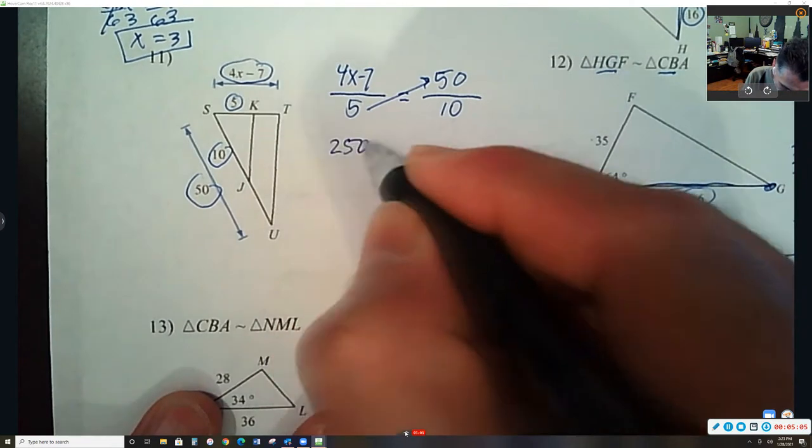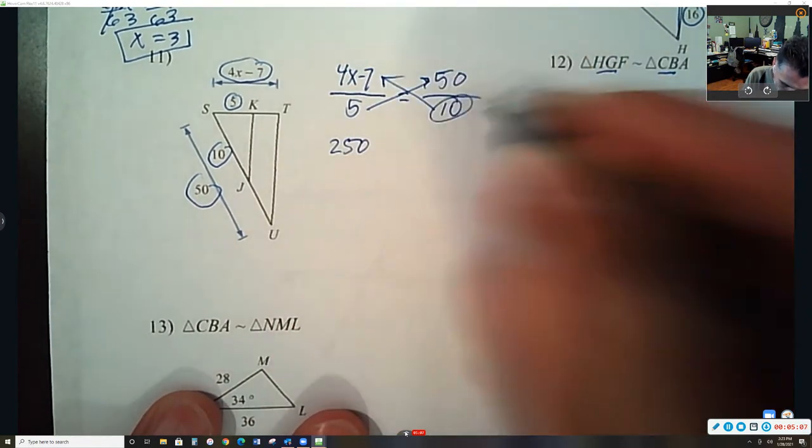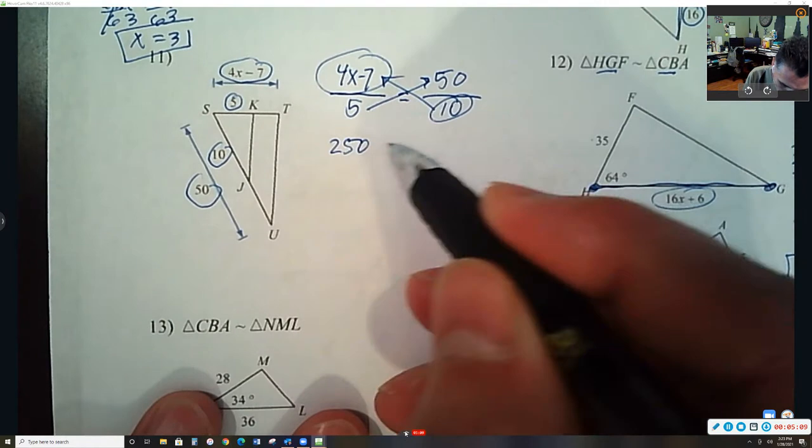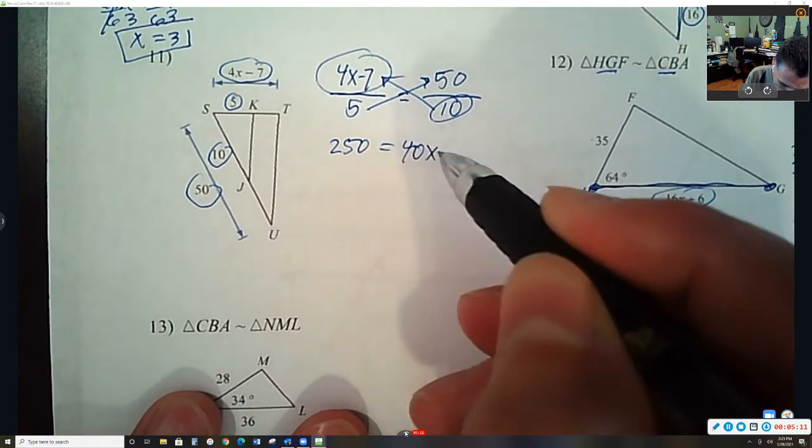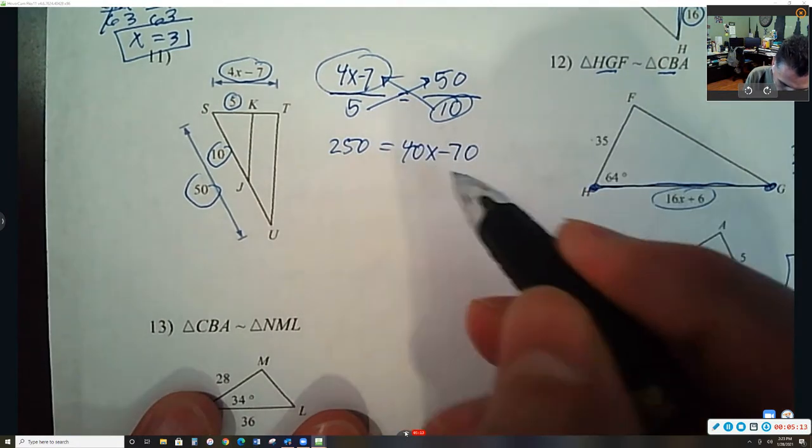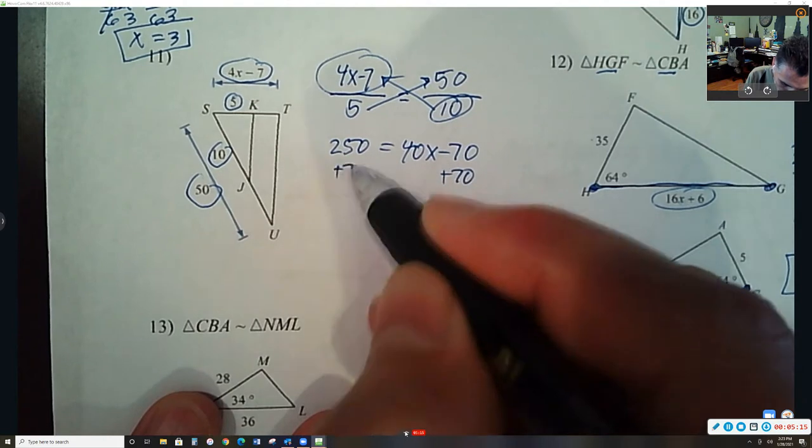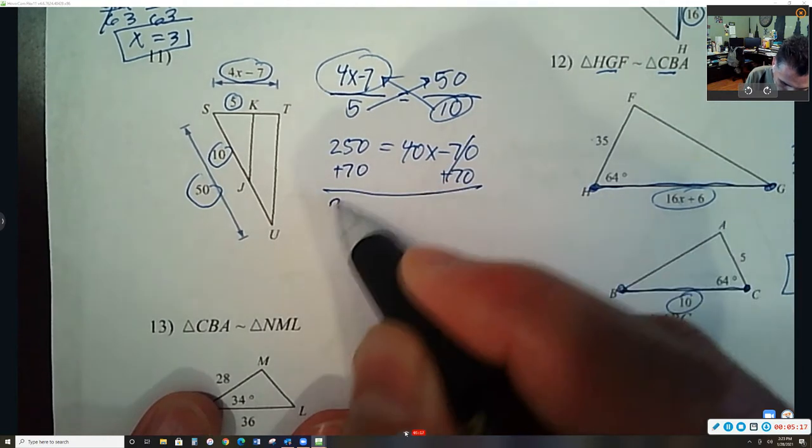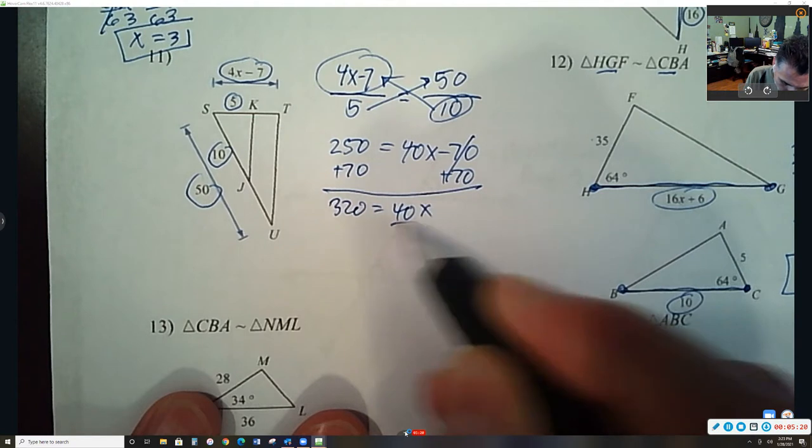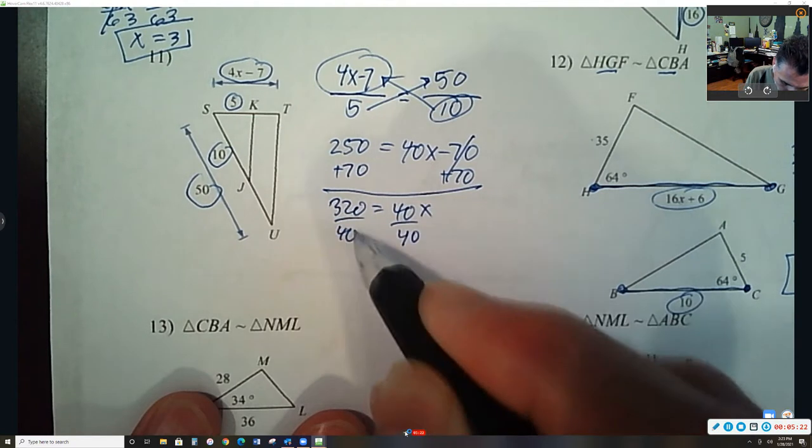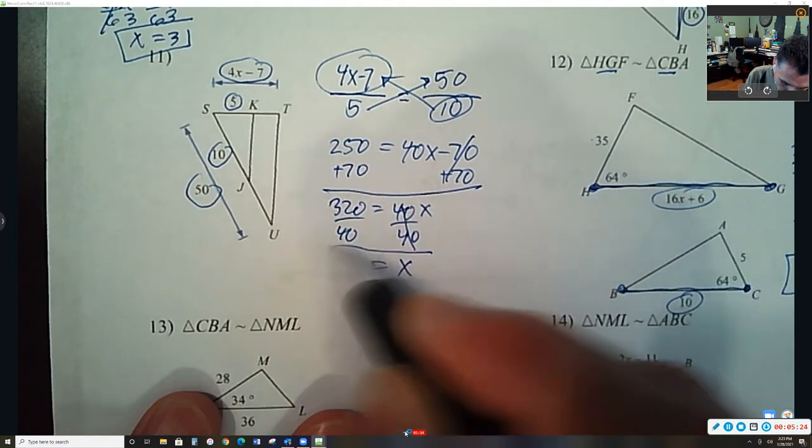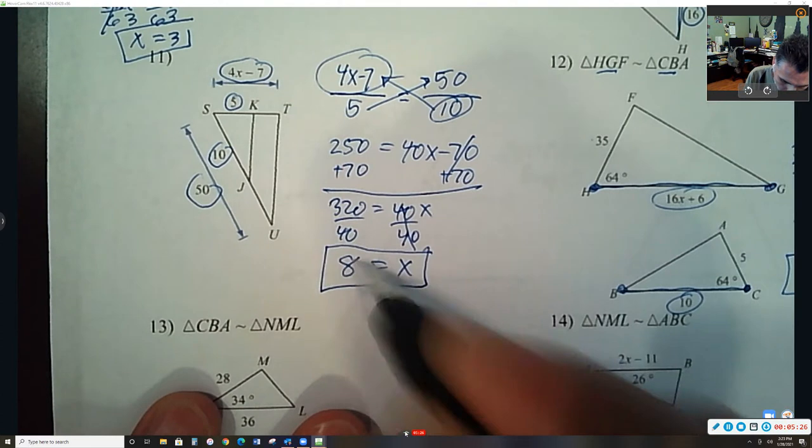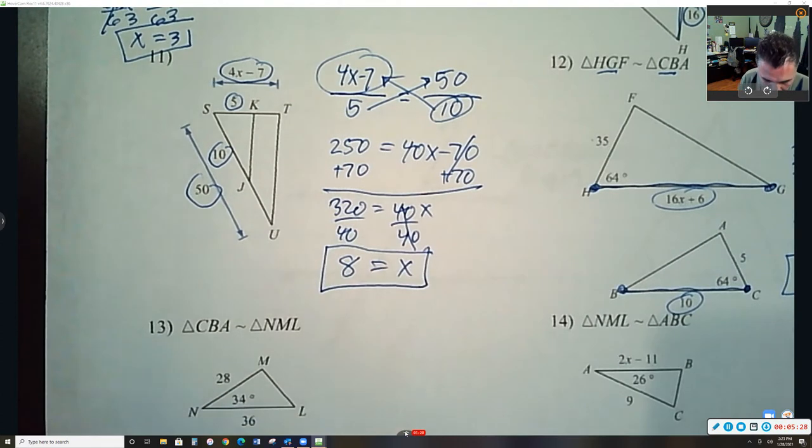That's 250. Again, it's 10 times both of these. 40x minus 70. Add 70. Divide by 40. x equals 8. And that's it.